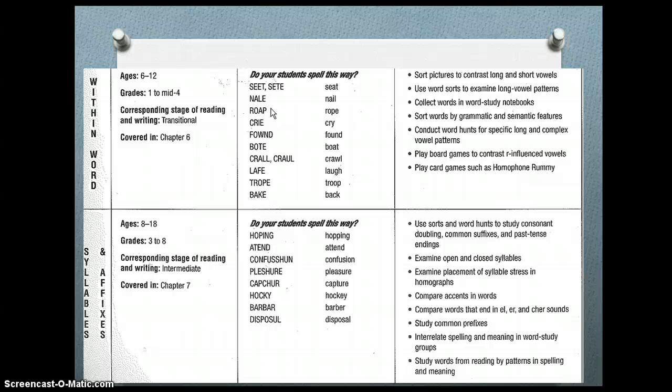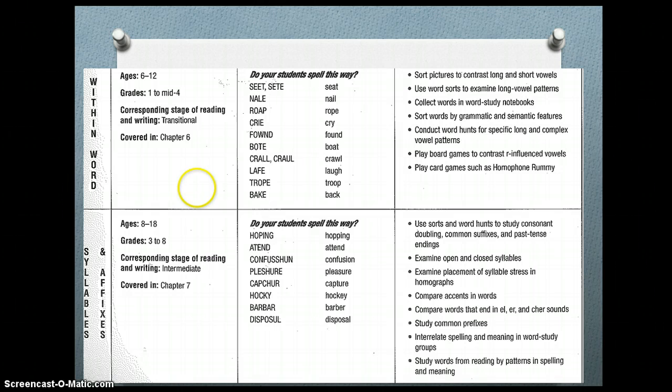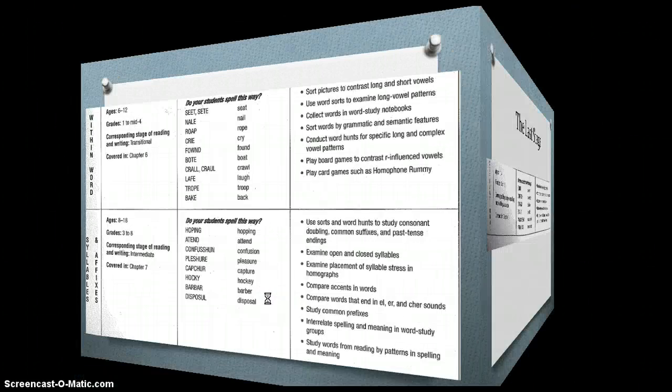They also start to learn the difference between homophones such as 'bear' and 'bare' and 'deer' and 'dear.' Next we have the syllables and affixes stage, ages eight to eighteen, grades three through eight — upper elementary and middle school. Many errors occur in two-syllable words, especially at the syllable juncture where the two syllables meet, and may involve errors with prefixes and suffixes. For example, with 'hopping,' not knowing that you need to double the consonant — you're seeing errors at that tricky syllable juncture.